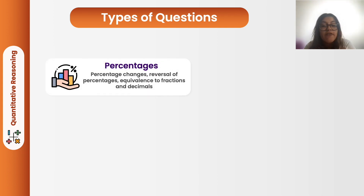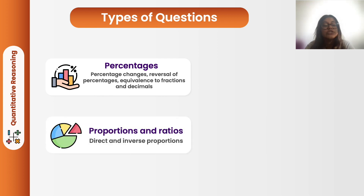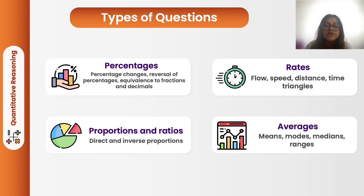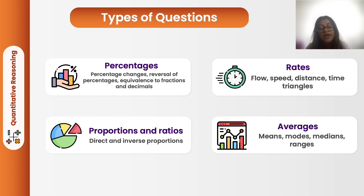Next, let's look at the different types of questions. Firstly, you have percentages — percentage changes, reversals of percentages, equivalence to fractions and decimals, and so on. We also have proportion and ratio questions — direct and inverse proportions. We then have rates — flow, speed, distance-time triangles — and finally averages, which covers mean, modes, medians and ranges.